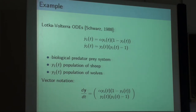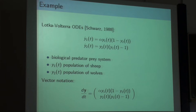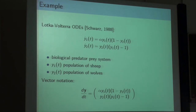There is a population of sheep called y1(t) and a population of wolves called y2(t), where t is time. We look at the time evolution of both populations. The assumption is these animals live in a closed system with only sheep and wolves and nothing else.